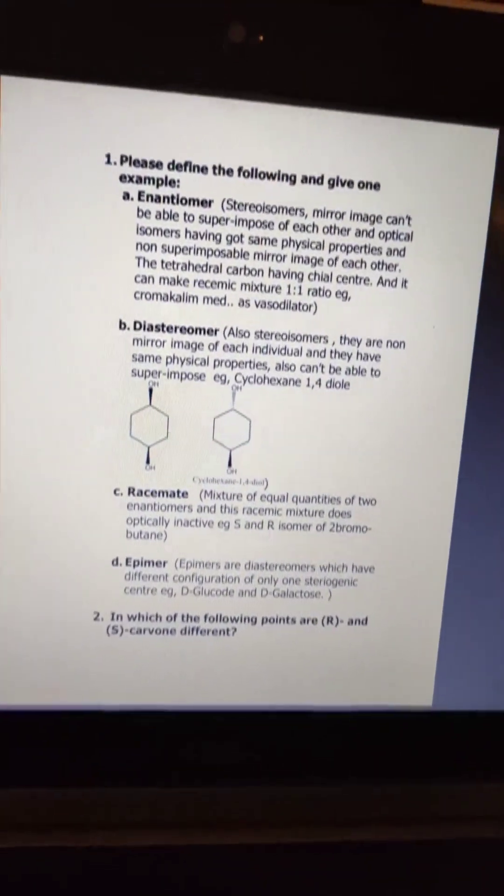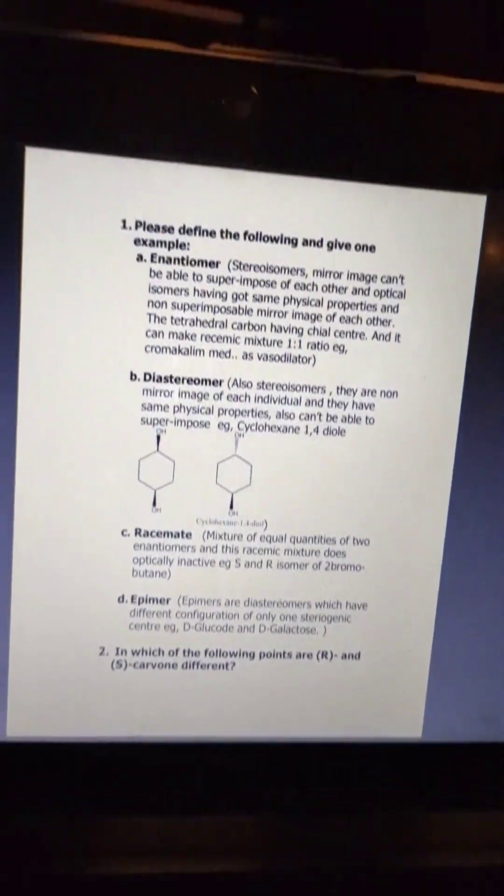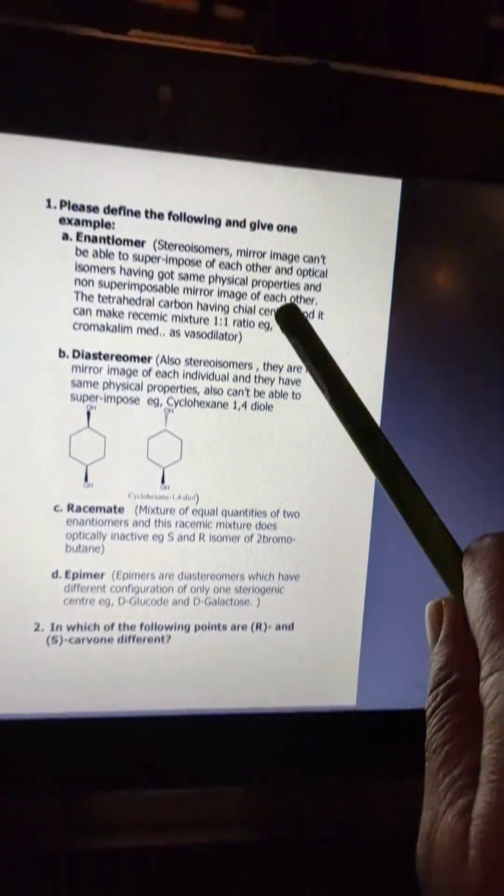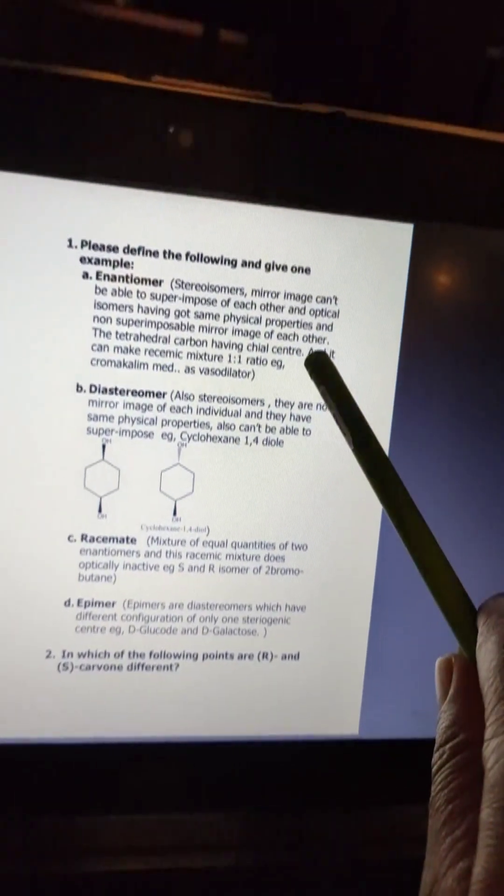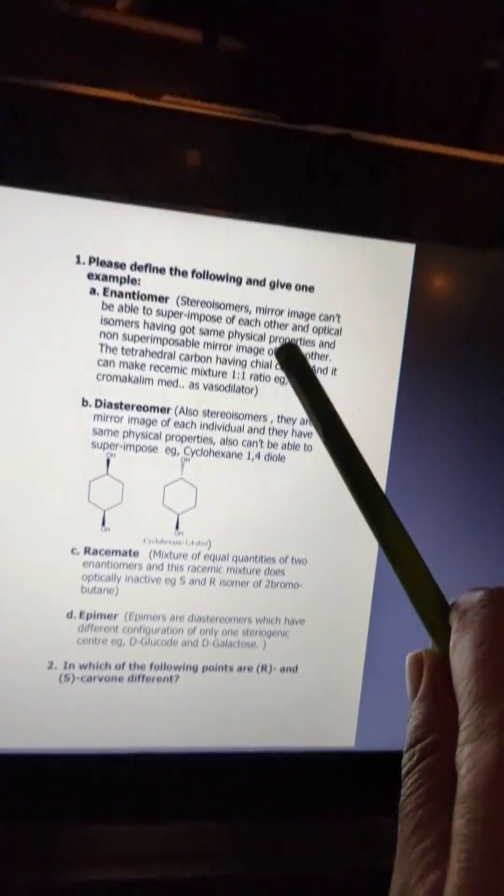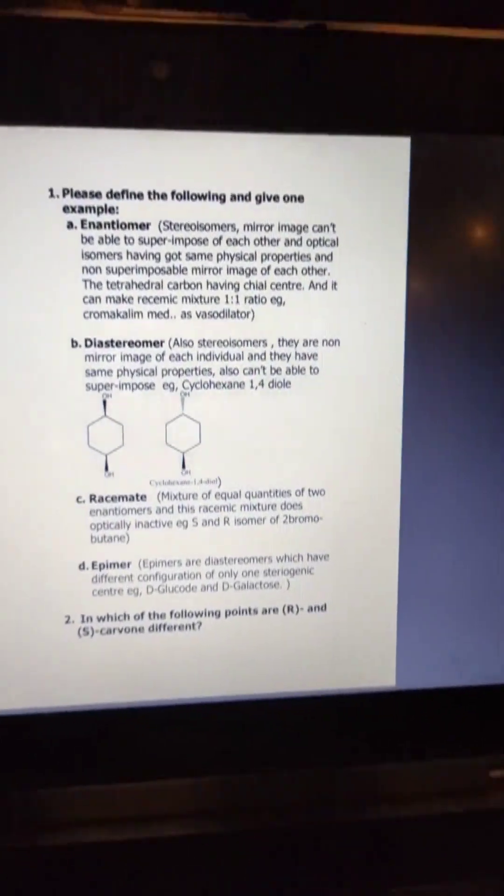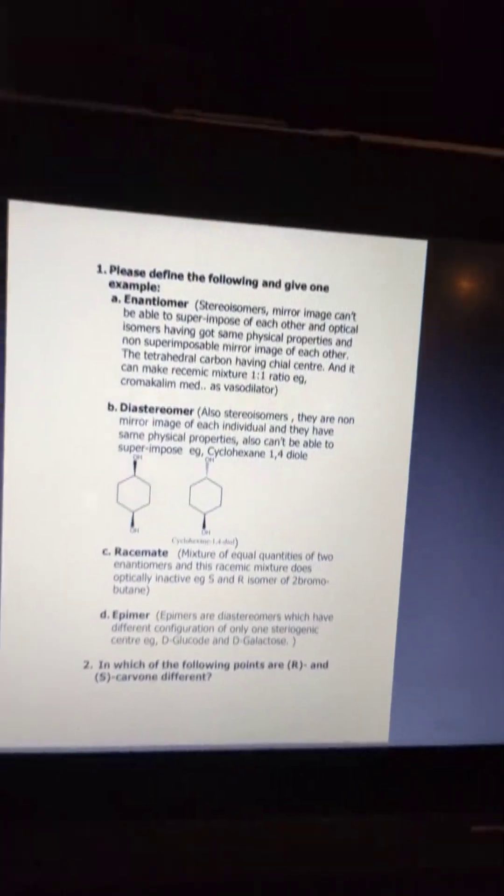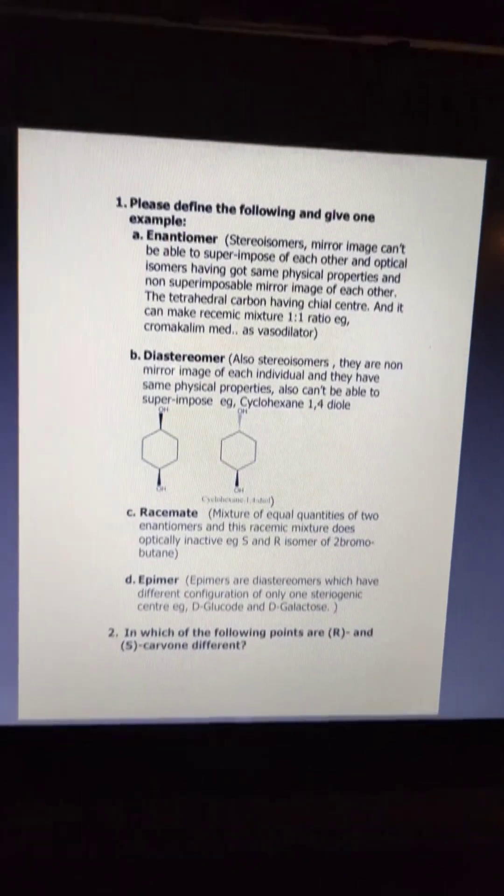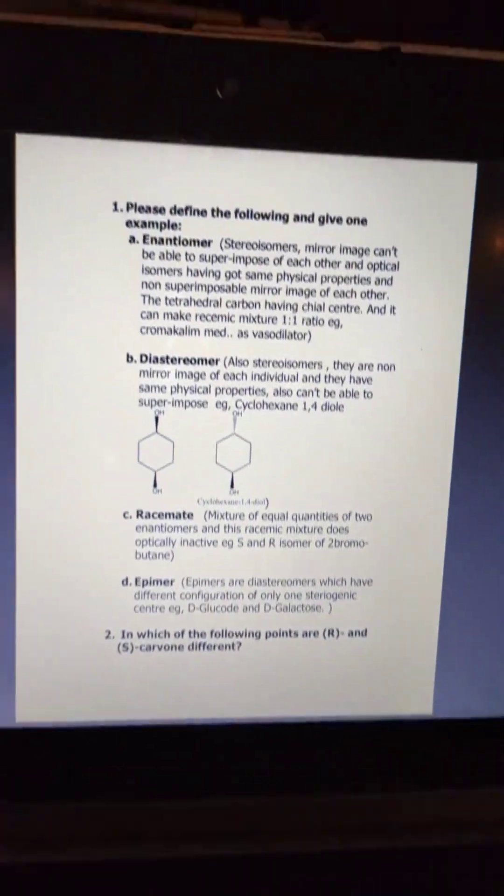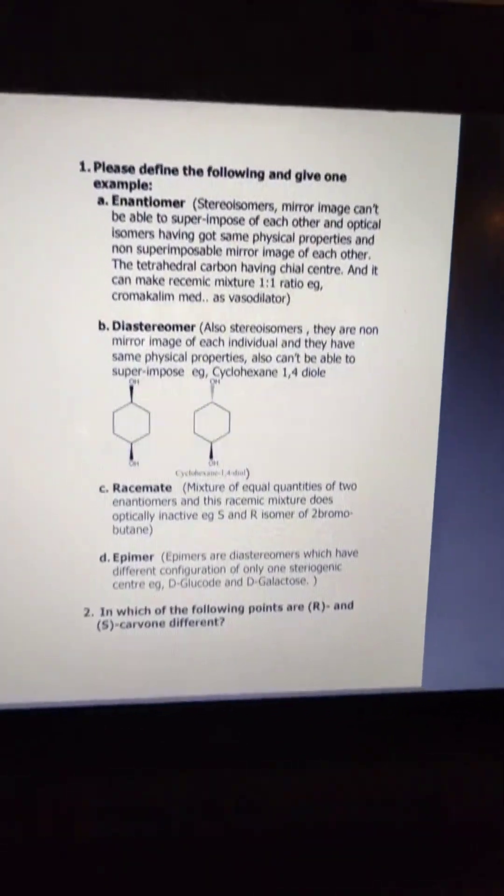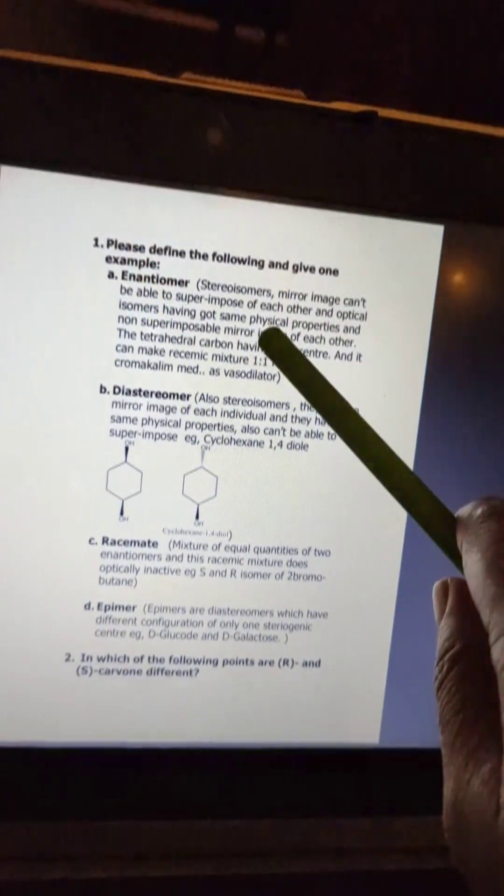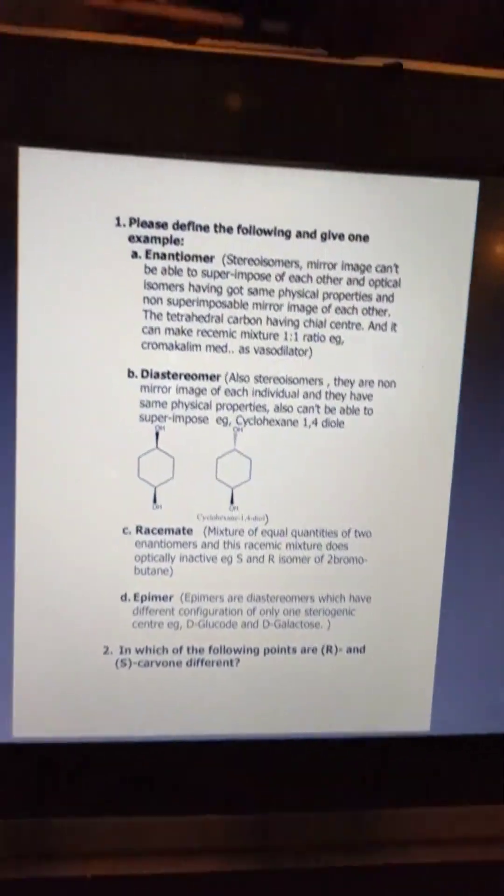Another specification is that these enantiomers can form racemic mixtures. They can form the racemic mixture at 50-50, one to one ratio. They can't be able to rotate the light when they form the racemic mixture.